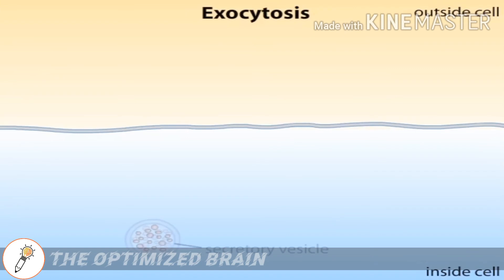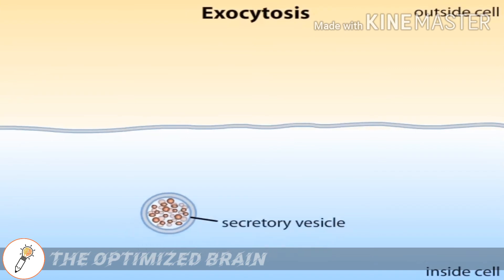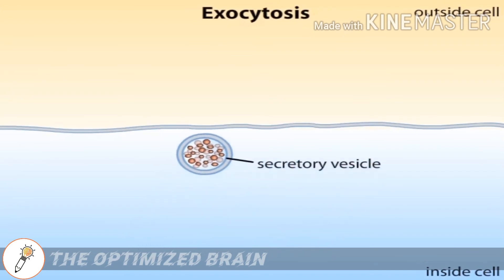In contrast to endocytosis, exocytosis is the process by which a variety of substances leave the cell. For example, newly made proteins destined for secretion are packaged into vesicles inside the cell and transported to the plasma membrane.